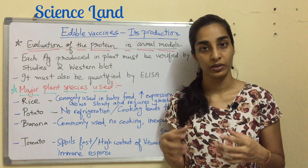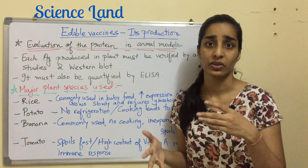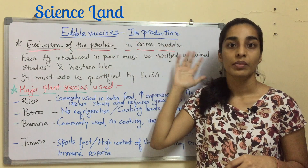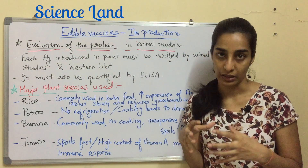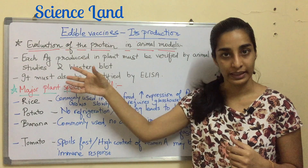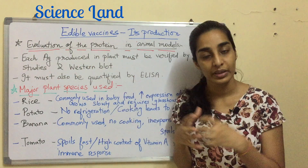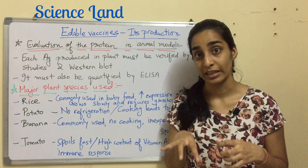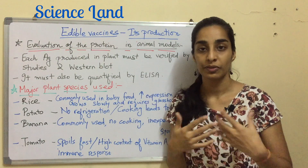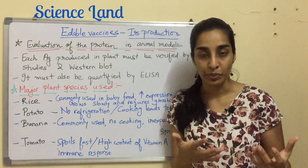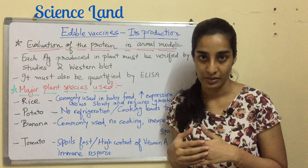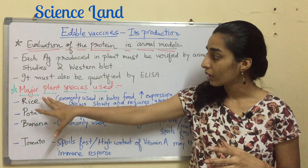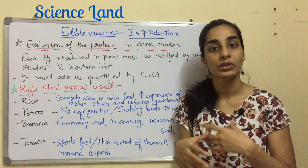Regardless of which method a scientist uses — direct or indirect — evaluation of the protein in animal models is mandatory. Each antigen produced in a plant must be verified by animal studies and Western blot, because we need to understand the properties of that antigen before giving it to humans. It must also be quantified by ELISA.